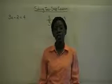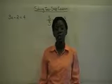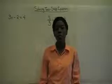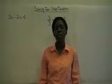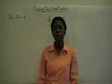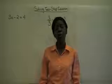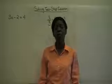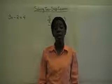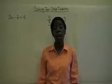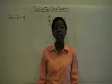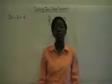Today we're going to be solving two-step equations. A two-step equation is just a combination of addition and subtraction and multiplication and division. We will solve it the same way we solve one-step equations — by taking the opposite or the inverse operation and applying that to get the value of the variable.